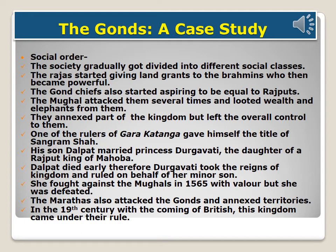The Gond society gradually divided into different social classes. Rajas started giving land grants to Brahmins, who became powerful. Gond chiefs also began aspiring to be equal to Rajputs. The Mughals attacked them several times, looted wealth, and annexed parts of the kingdom but left overall control to the Gonds. One ruler of Garha-Mandla gave himself the title Sangram Shah. His son Dalpat married Princess Durgavati, daughter of a Rajput king. When Dalpat died early, Durgavati took the reins of the kingdom and ruled on behalf of her minor son. She fought the Mughals in 1565 with great valor but was defeated. The Marathas also attacked the Gonds and annexed territories. In the 19th century, with the arrival of the British, this kingdom came under their rule.